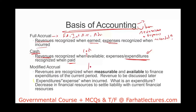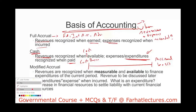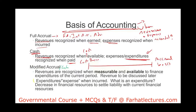Cash and accrual are basically on the extremes of the basis of accounting spectrum. In between cash and accrual, we could have many other bases — tax basis, modified accrual, modified cash. We're going to learn about modified accrual now, because we're going to be using modified accrual when we deal with governmental funds.